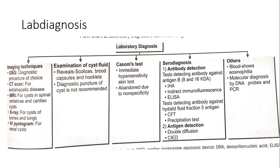Under imaging techniques: ultrasonography, CT scan, MRI, X-ray, and intravenous pyelogram for renal cysts. Ultrasonography is used generally; CT scan for extra-hepatic diseases; MRI for spinal, vertebral, and cardiac cysts; X-ray for bones and lungs; and intravenous pyelogram for renal cysts.